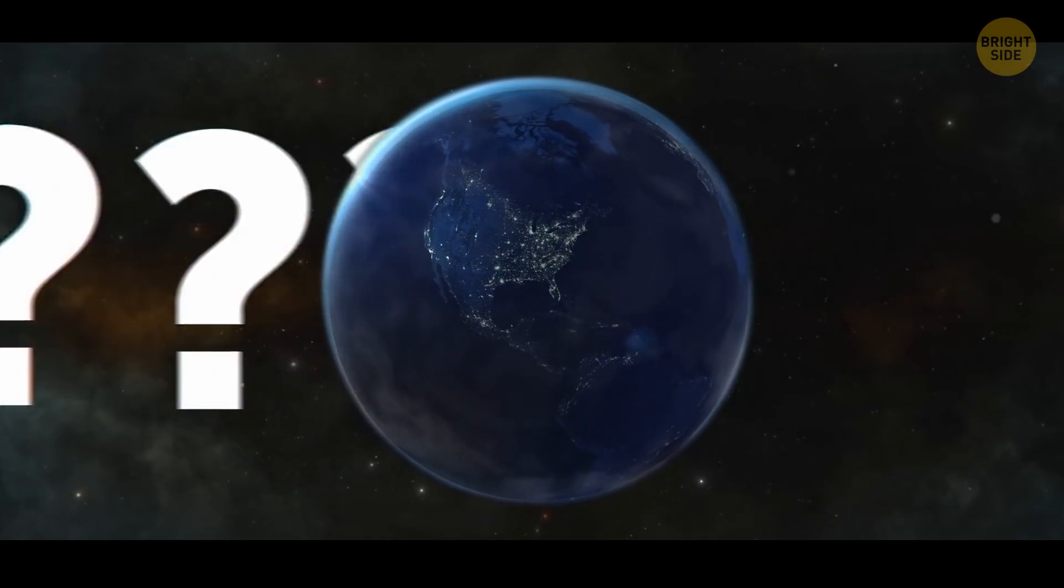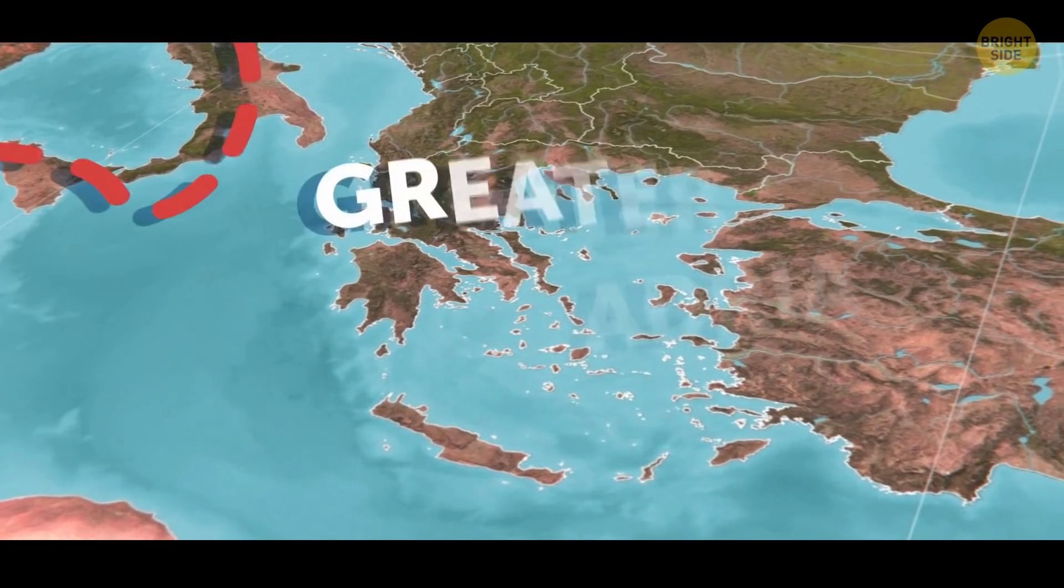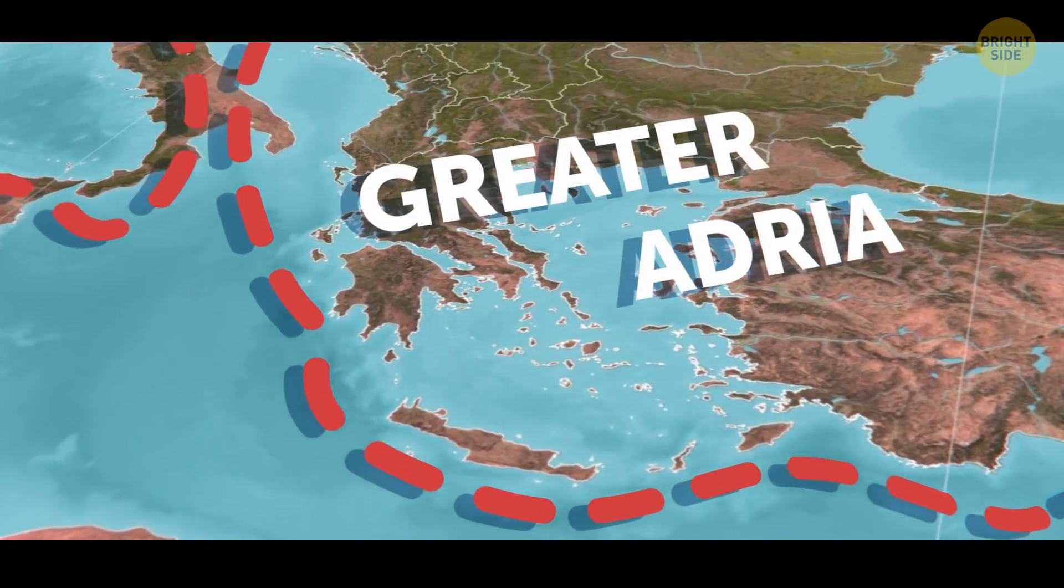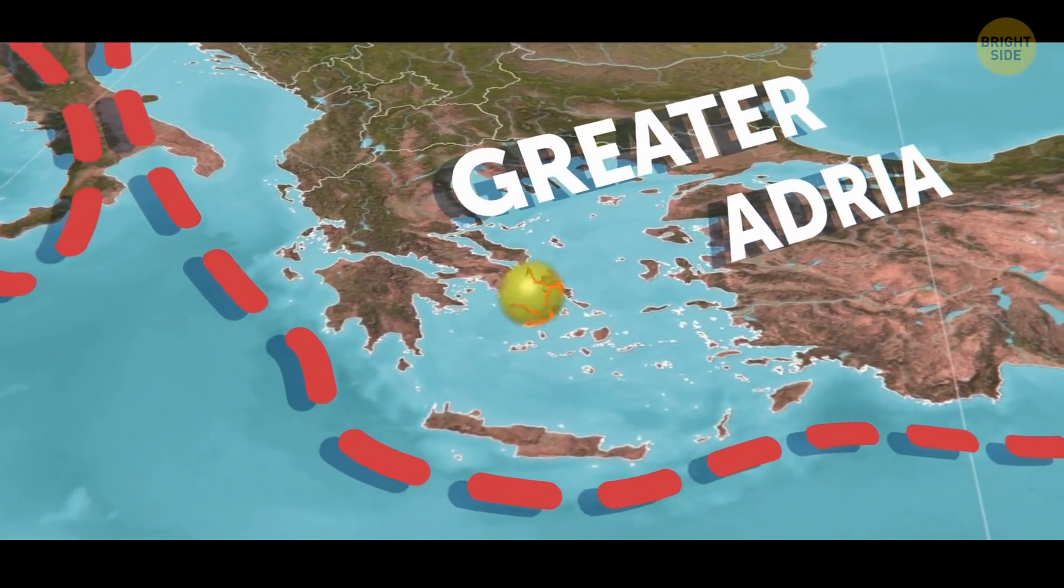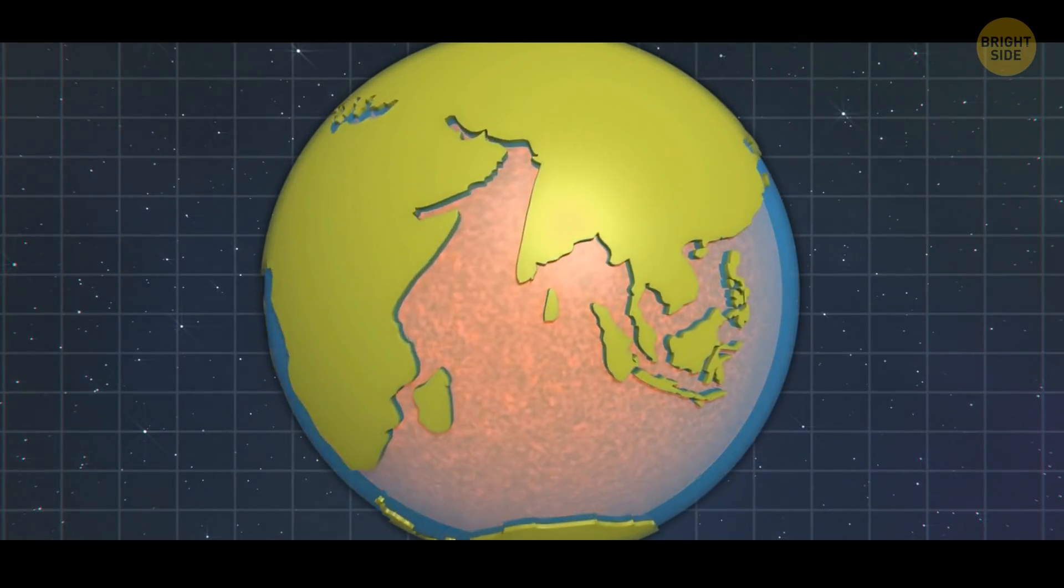We'll have to ask our planet about that one. Earth lost what was called Greater Adria between 100 and 120 million years ago. So, how did that happen, and where did it go?